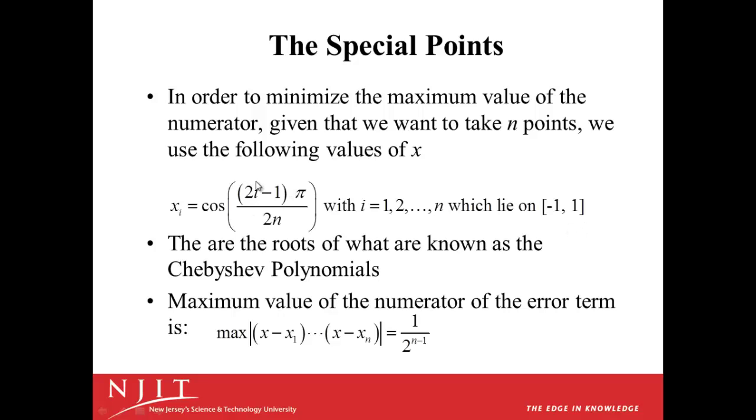So you notice that the numerator, 2i minus 1, is no bigger than 2n. So you're going up to cosine pi, starting with i equal 1. So you're starting with cosine of pi over 2n. So what you have is values that are in the parentheses here that are between 0 and pi. And on that interval, that's where cosine goes from 1 down to minus 1. So the x values fall on the interval from minus 1 to 1. These are the roots of what are known as the Chebyshev polynomials.